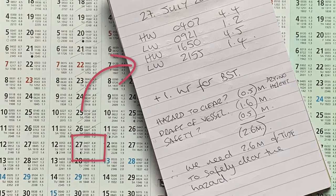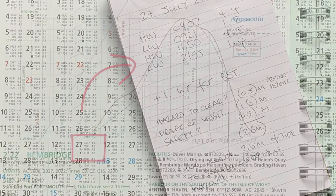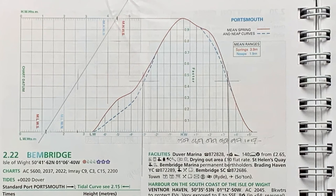I've transferred the times and the tidal heights for high water and low water — two of each during that 24-hour day — onto a pad. Those times are in universal time because no hour has been added yet. Then, looking at what we've got, we've got a hazard to clear. I've assumed a mud bank that dries to half a metre above chart datum. To clear that with a vessel of 1.6 metres draft, we're going to need 2.1 metres of water, and I've added half a metre for safety, so we need 2.6 metres of water to get over that mud bank.